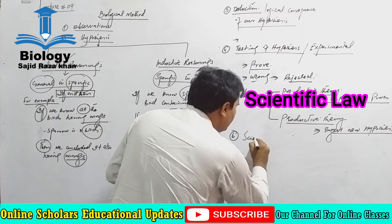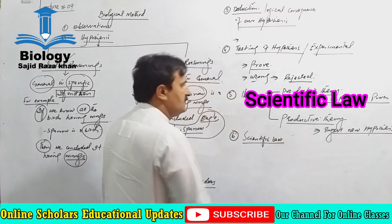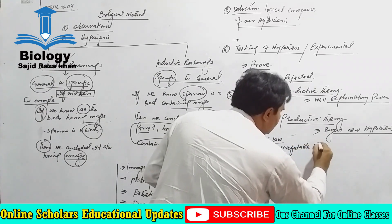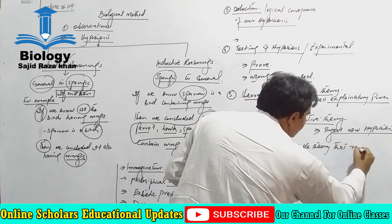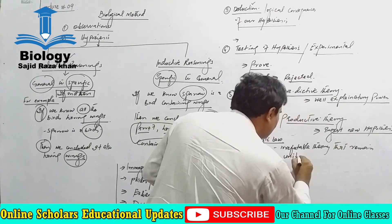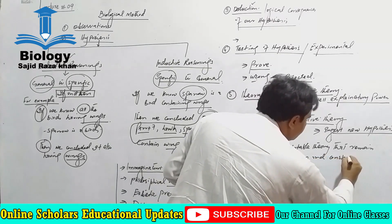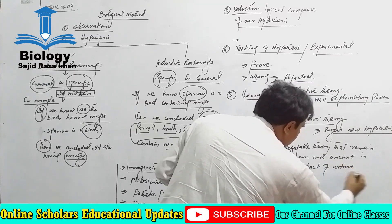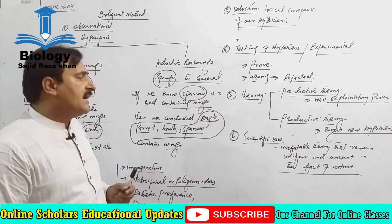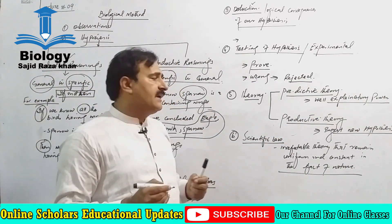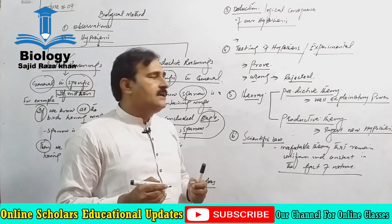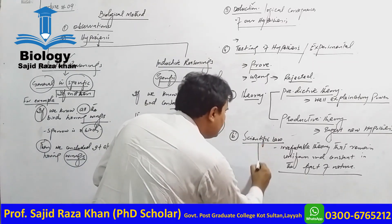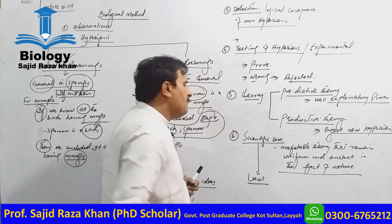A scientific law is actually an irrefutable theory that remains uniform and constant in the facts of nature, and cannot be disproved by other scientists. However, life has changeable conditions — things in life do not remain uniform — so there are very few laws in biology. Important examples of laws in biology are the Hardy-Weinberg law, which explains the populations of an area.